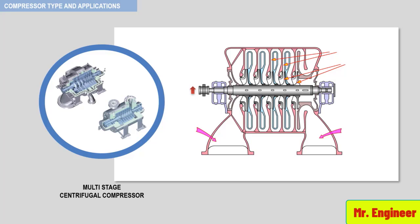Then, in later videos, you will find a dedicated in-depth discussion covering each of these components individually. Here you have the suction nozzle of the compressor, and here the discharge nozzle, the rotating shaft, the impellers — in our example here, you have five impellers, making this a five-stage centrifugal compressor — and finally, the diffusers.